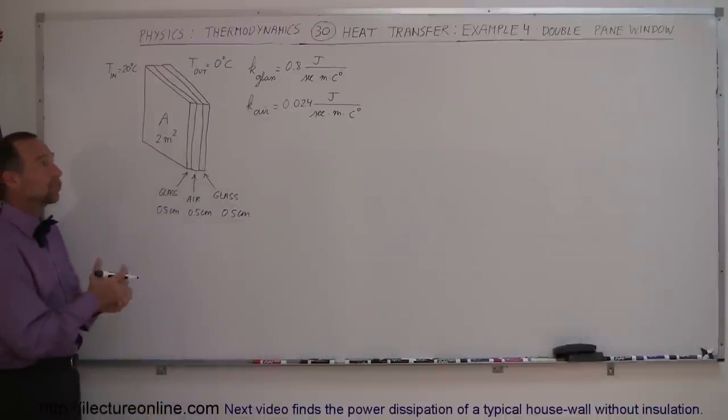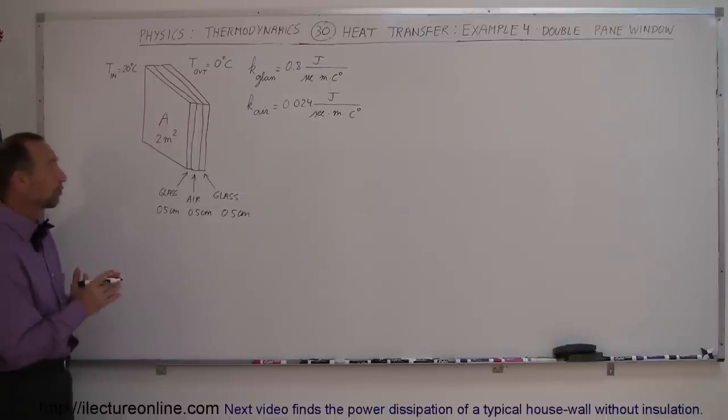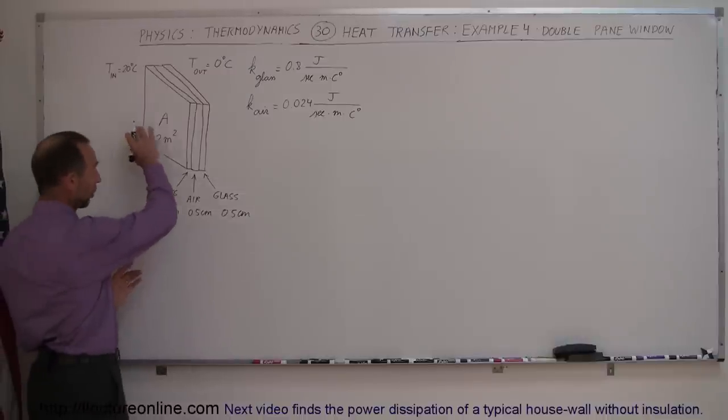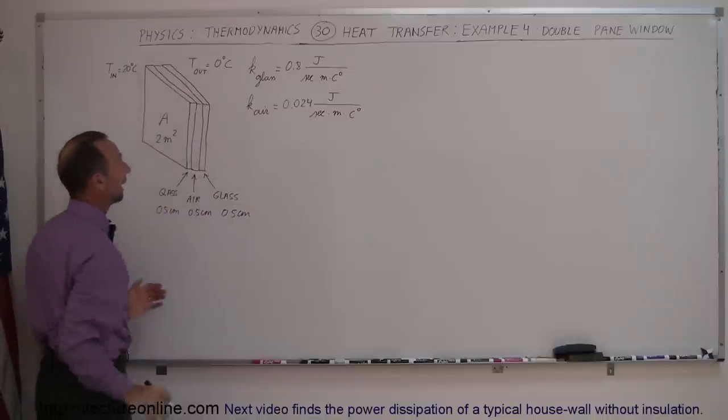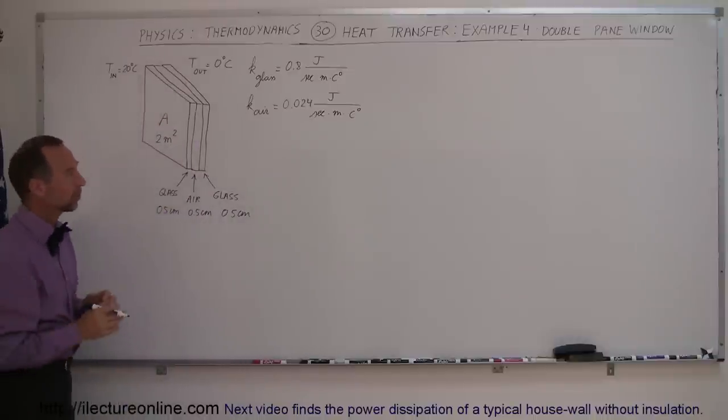Our next example on heat transfer is on double pane windows. Here we're going to figure out how much heat is transferred through a double pane window if the inside temperature is 20 degrees centigrade and the outside temperature is 0 degrees centigrade.